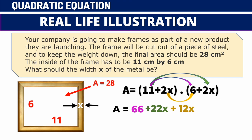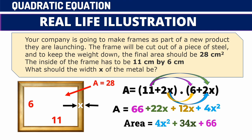Applying the FOIL method: the outer terms give 22x, the inner term 2x times 6 gives 12x, and the last term 2x times 2x gives 4x². We combine like terms 22x and 12x to get 34x. Arranging into standard form, we write 4x² first, then 34x. The constant term is obtained by subtracting — and so our word problem has been illustrated using a quadratic equation. We will learn how to solve for x in our next topics.